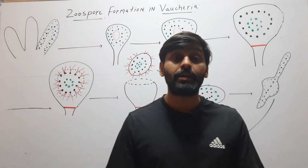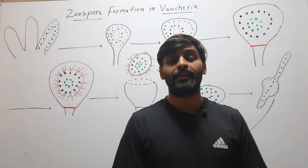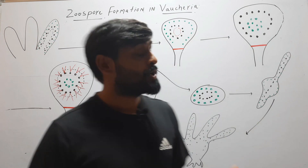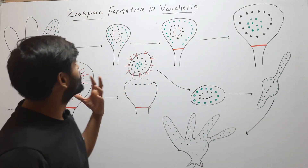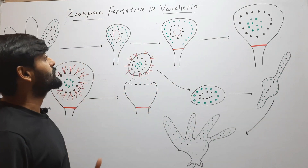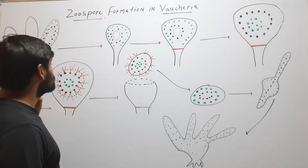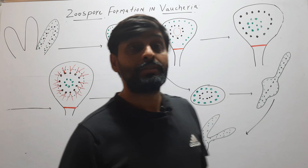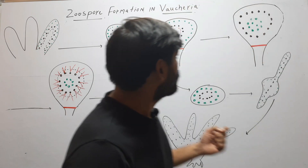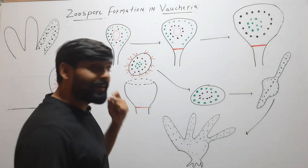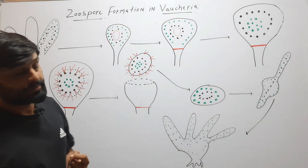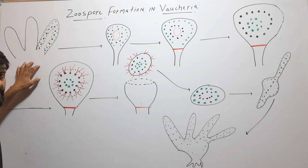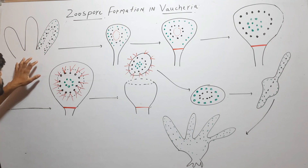Hello friends, welcome to my YouTube channel. In this video we will discuss zoospore formation in Vaucheria. This zoospore formation occurs in Vaucheria, which has an aquatic habitat. Vaucheria is a filamentous alga.